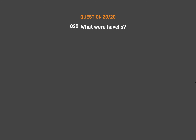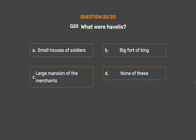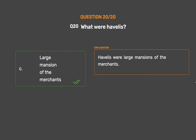Question No. 20: What were Havelis? Option A: Small houses of soldiers. Option B: Big fort of king. Option C: Large mansion of the merchants. Option D: None of these. The correct answer is Option C: Large mansions of the merchants. Havelis were large mansions of the merchants.